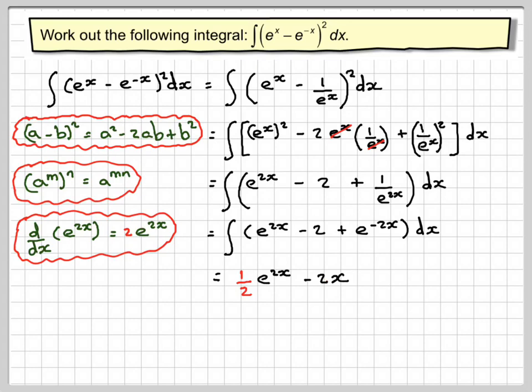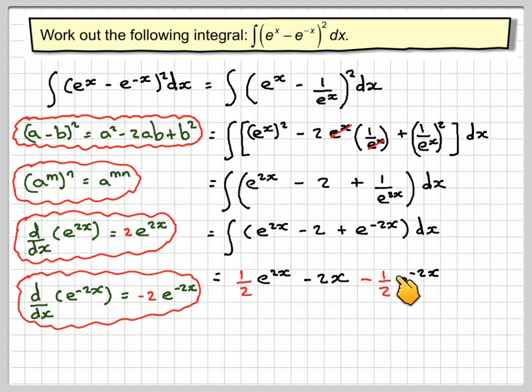Integral of 2 is minus 2x. Same idea here. d/dx of e to the minus 2x is minus 2 e to the minus 2x. We need to make the sign plus, so we're going to need to make the sign minus. If we think about it, minus 2 times minus 1 half gives you plus 1, which is when we differentiate back we get back to that.